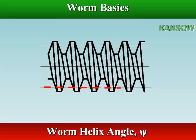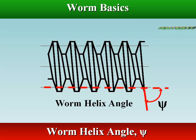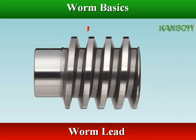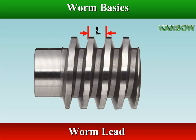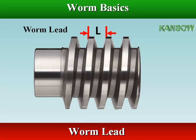Worm helix angle is the angle between the tangent to the thread helix on the pitch cylinder and the axis of the worm. Worm lead is the linear distance through which a point on a thread moves ahead in one revolution of the worm.